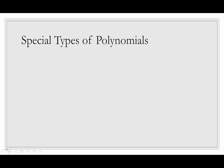On this slide we're going to talk about some special types of polynomials — ones that are used more frequently and therefore have special names. The first is a monomial. 'Mono' is a prefix meaning one, and 'nomial' is a suffix meaning number. A monomial is a polynomial with one term. Examples: f(x) = 17, f(x) = x to the 42nd, or f(x) = 3x to the 18th.